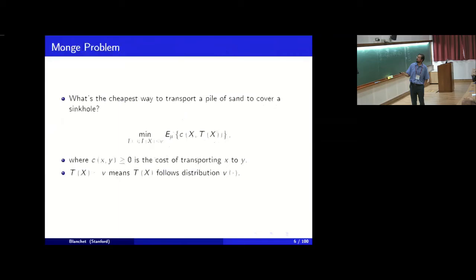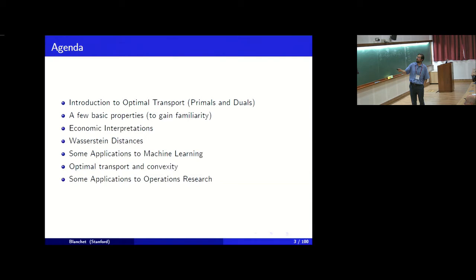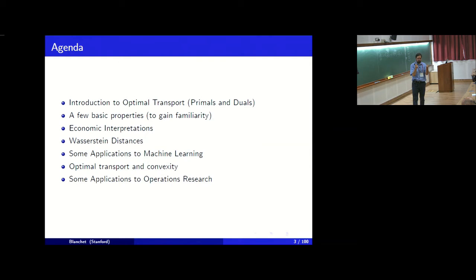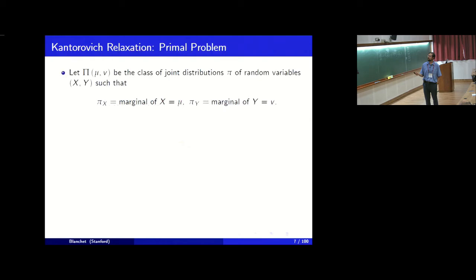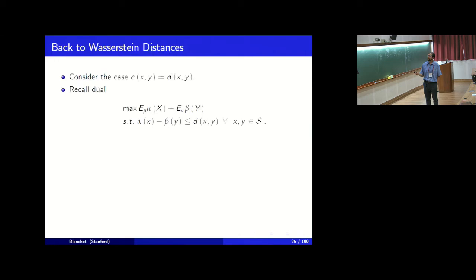Let me summarize the program. I have introduced optimal transport: the optimal transport problem itself, proof techniques, economic interpretations, clearing markets and computing explicit prices, Wasserstein distances, Kantorovich duality, and its use in machine learning and AI. Now I'm going to talk about how to use optimal transport for applications in machine learning and operations research, leveraging all the intuition we've built up.